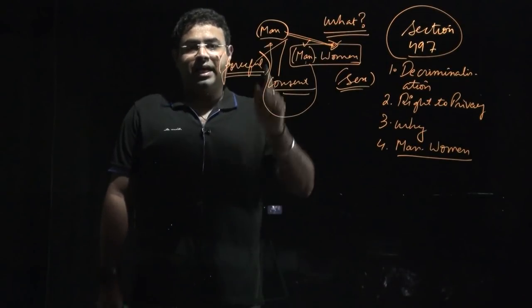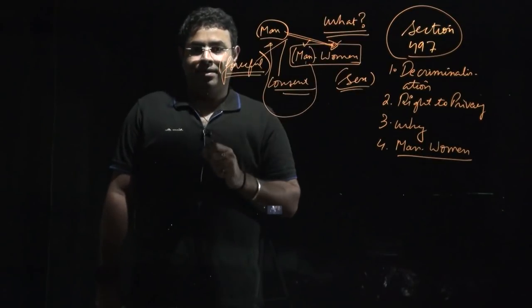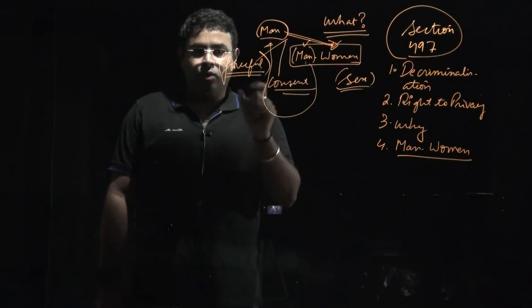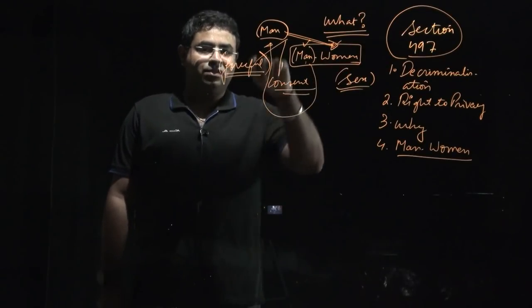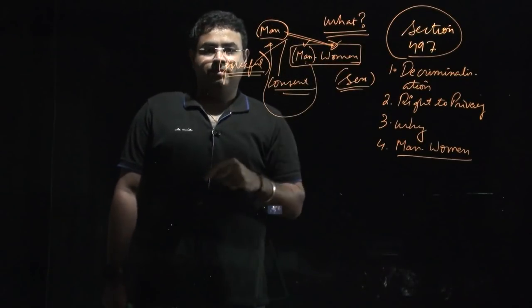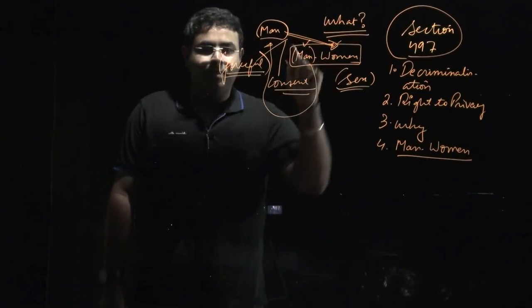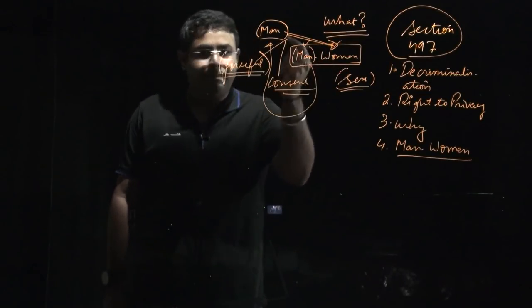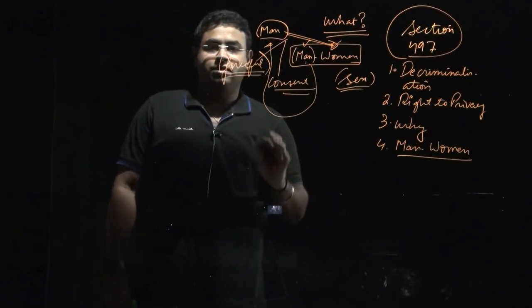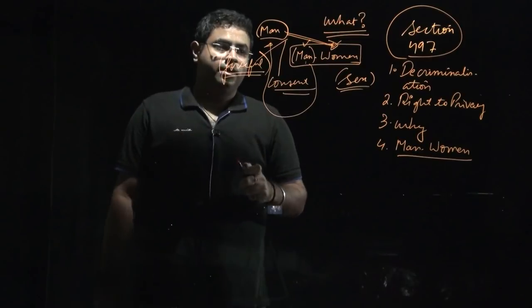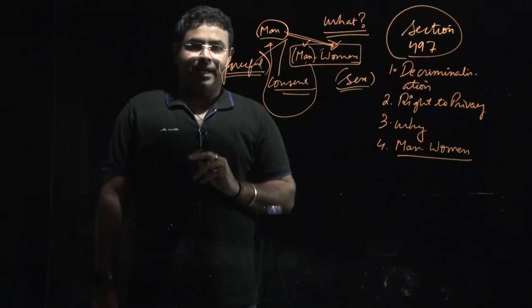What it means is that any man who knows that a particular woman is married, if he indulges in sexual intercourse with that woman, then the husband of that woman can file a complaint against the man on the grounds of adultery. But a woman cannot file a complaint against a man. That will not be called adultery.